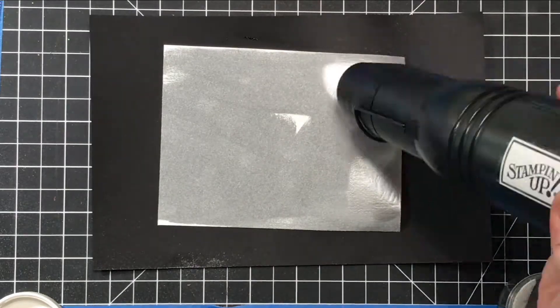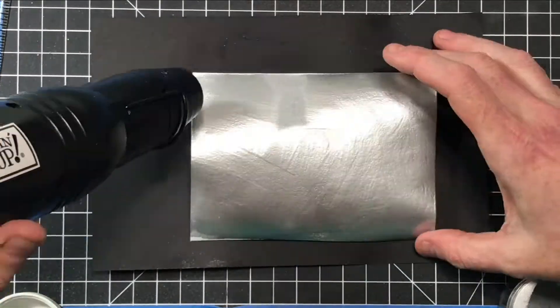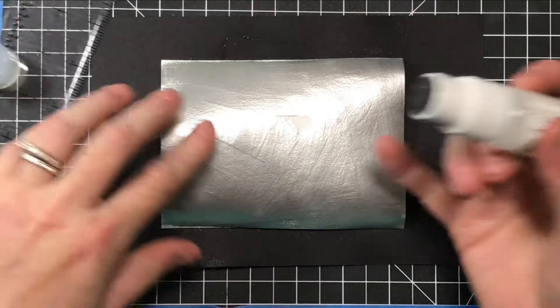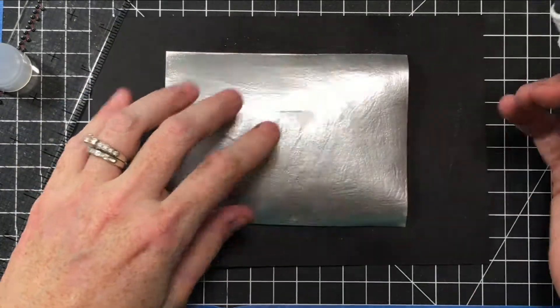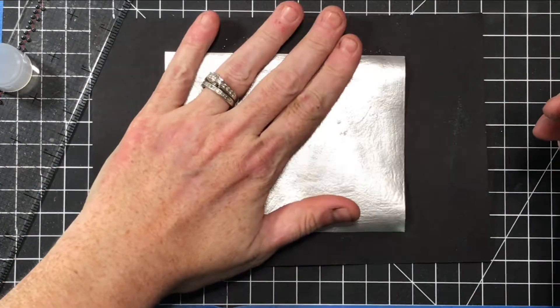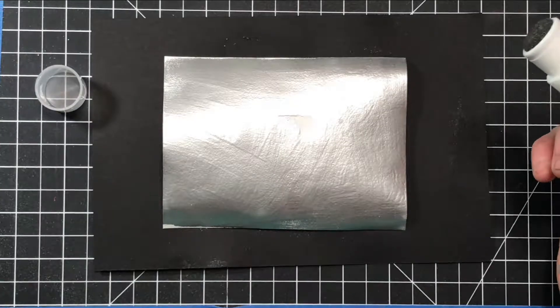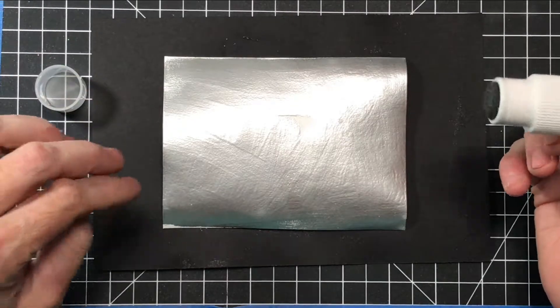silver Ranger embossing powder. Make sure that you get it all over. If you miss a couple spots it actually is okay with this project because we are going to be repeating these steps four different times to get a nice thick layer of embossing powder.